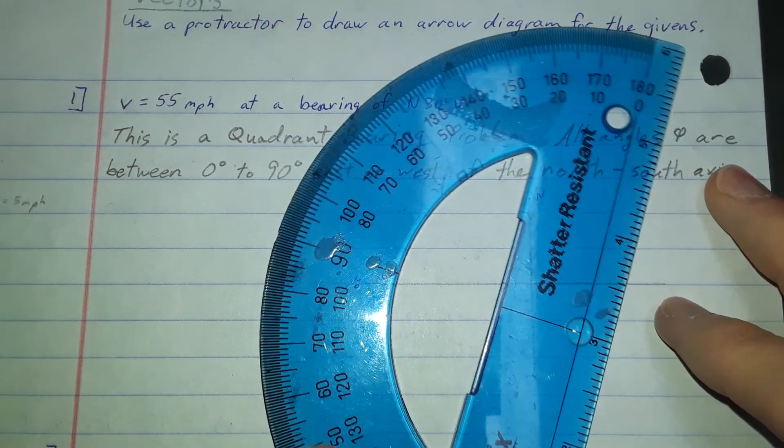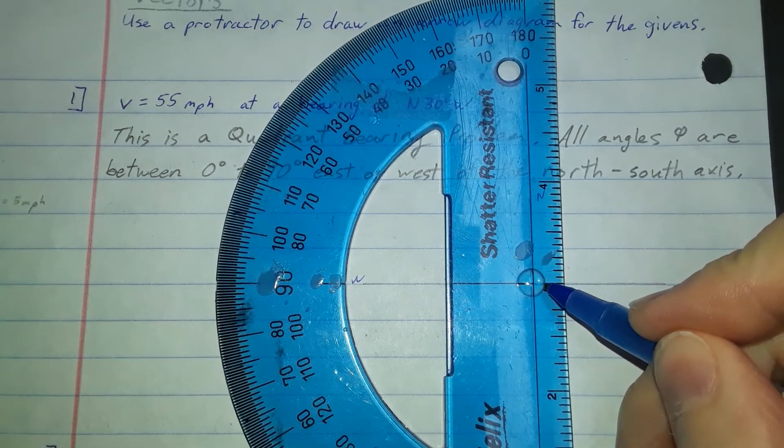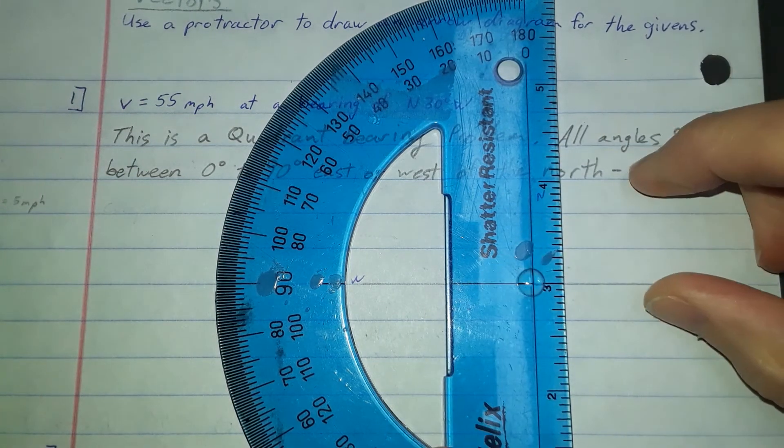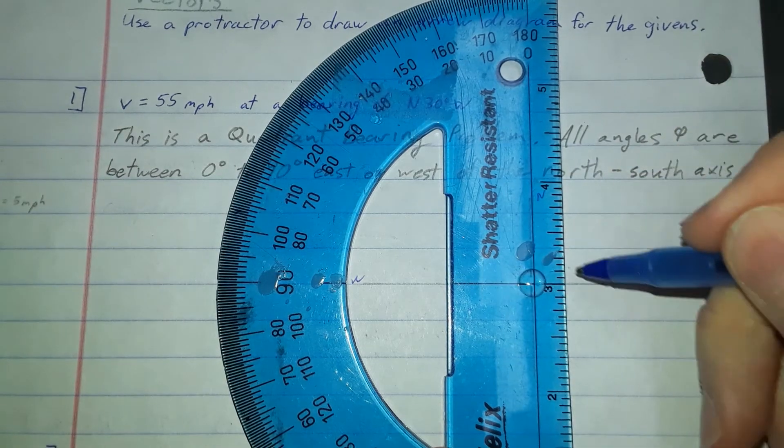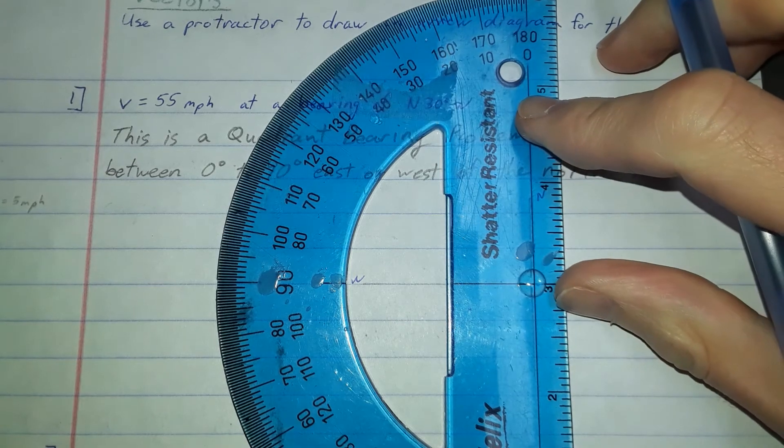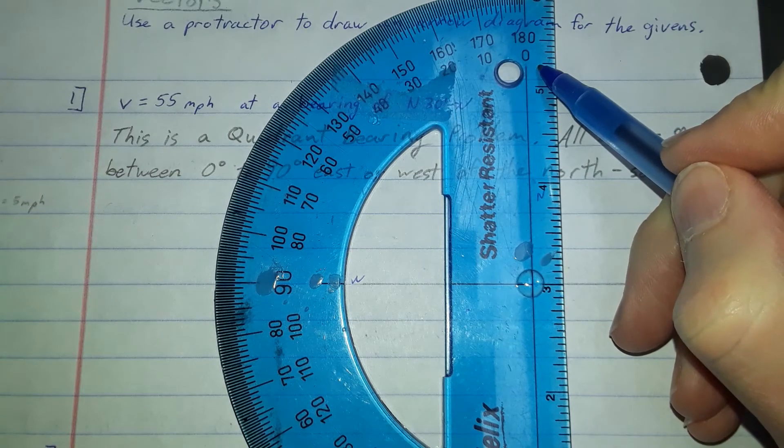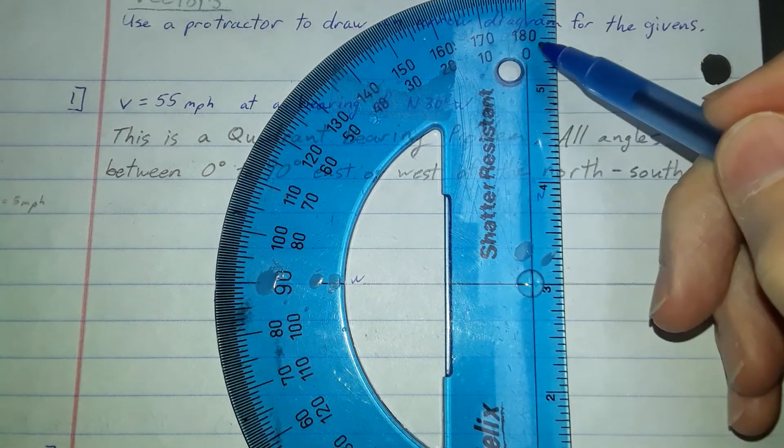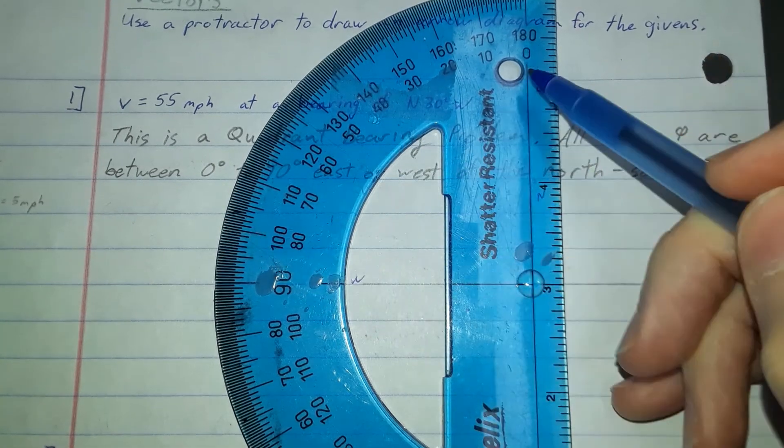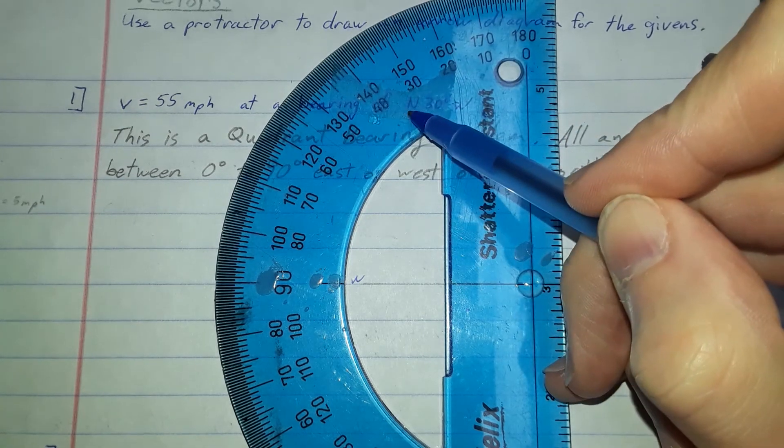When you bring your protractor in here, you should have kind of a little crosshair side. You want to line that up with the intersection of your north-south east-west axis. There's a line here that should be right in line with this axis and a line here that should be right in line with the other axis. That way you know you're square. Notice I have two gauges here. One counts from zero up, and one counts from 180 down. Since we are trying to get 30 degrees, we're going to start with our, we're counting from north, starting with zero and counting up to 30 degrees.